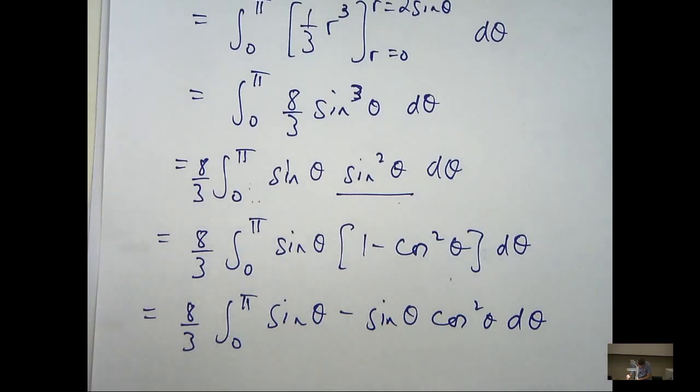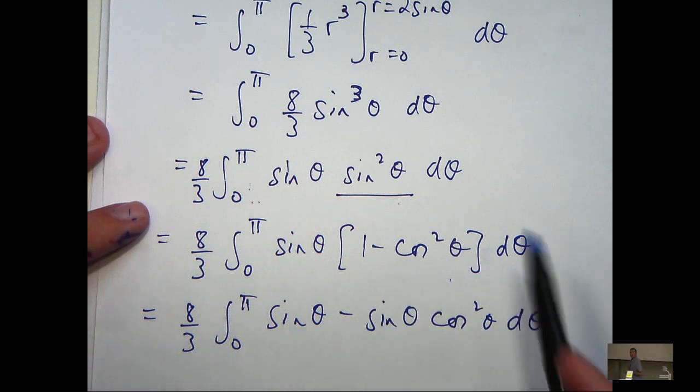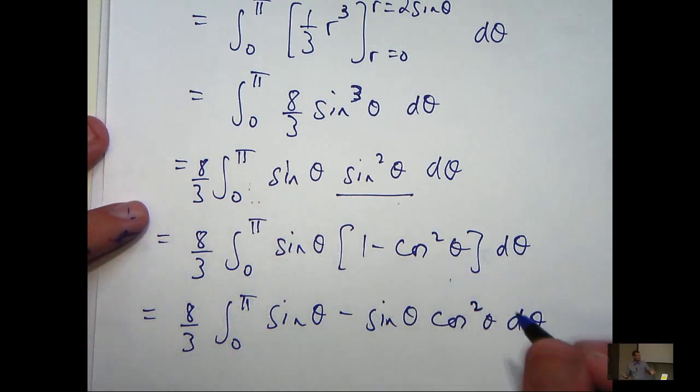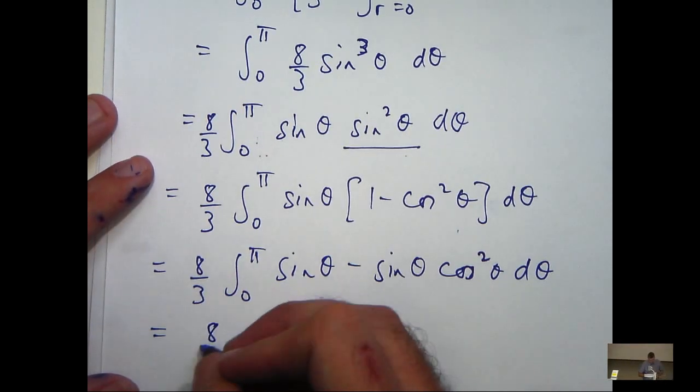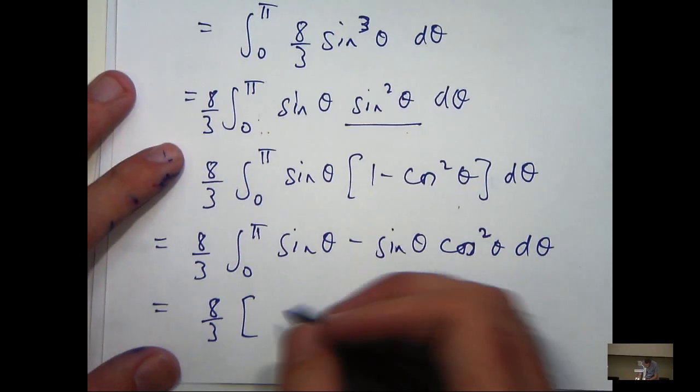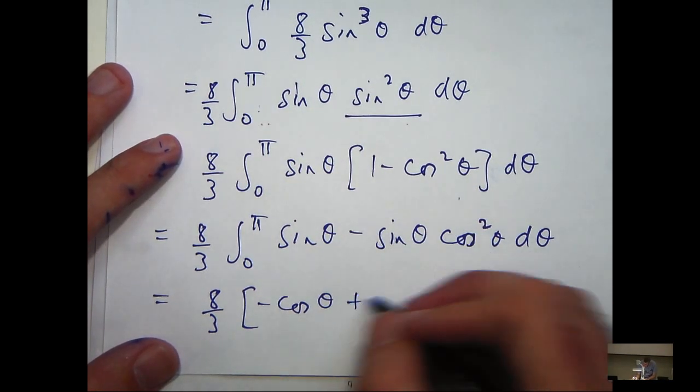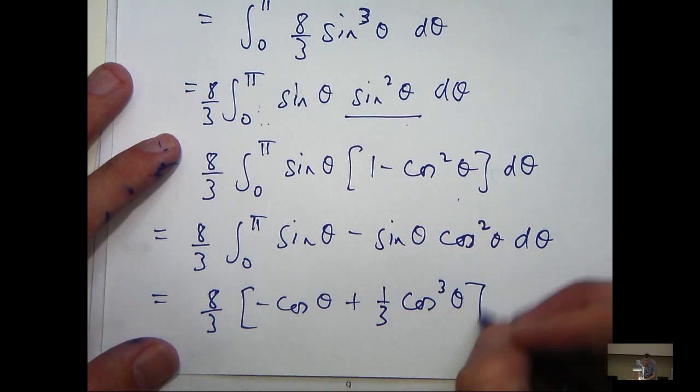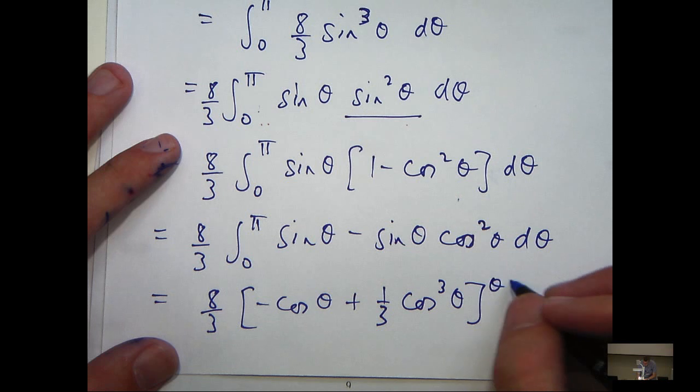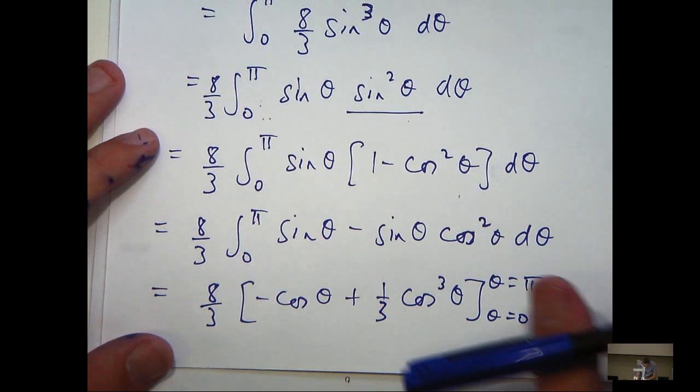So if I expand that bracket, I'll get the following. So I can integrate the first term and I can integrate the second term either by inspection or by a substitution. I'm going to do it by inspection and that's the way I recommend. So we're going to get something like this. This is going to go to positive 1 third cos cubed theta.